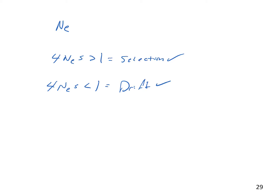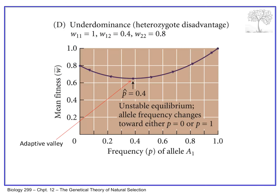What if we consider a population where heterozygotes are less fit than homozygotes? In this case, the adaptive landscape has two peaks — individuals homozygous for the A1 allele are fit, and those homozygous for A2 are fit, while heterozygotes are least fit. This is heterozygote disadvantage. We're looking at an adaptive landscape from part two of the chapter, with allele frequency on the x-axis and mean population fitness on the y-axis.